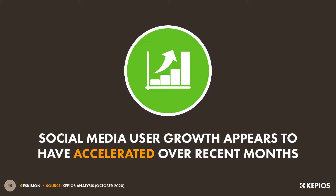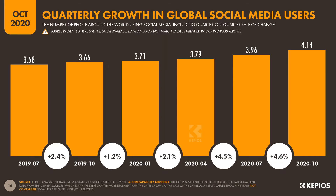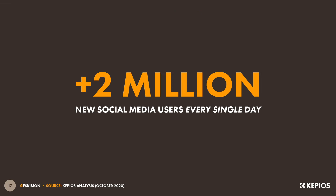And what's more, social media growth actually appears to be accelerating. Global user numbers grew by 180 million during Q3 alone, representing quarter-on-quarter growth of 4.6%. And for perspective, that means that an average of almost 2 million people started using social media for the very first time every single day between July and September.